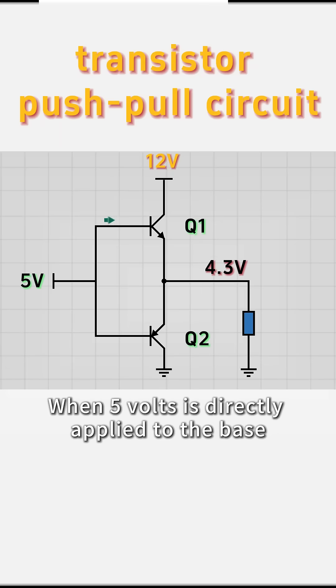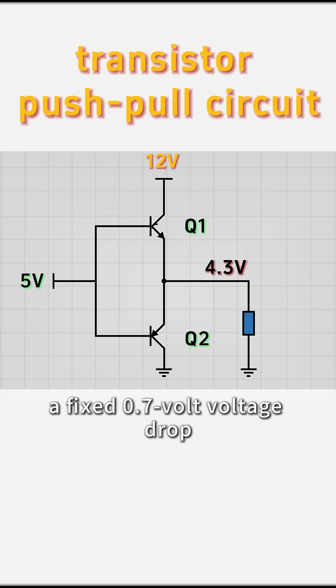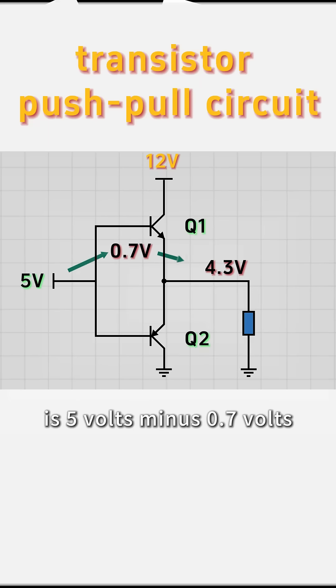When 5 volts is directly applied to the base, the transistor's base-emitter junction will have a fixed 0.7-volt voltage drop, so the voltage across the load is 5 volts minus 0.7 volts, which equals 4.3 volts.